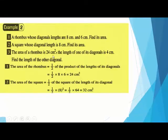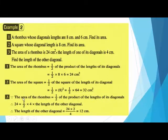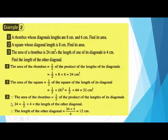The area of a rhombus is 24 and the length of one of its diagonals is 4 — find the length of the other diagonal. Using the formula: 24 equals half times 4 times the missing diagonal. We can rearrange: the missing diagonal equals 24 times 2 divided by 4. Alternatively, half of 4 is 2, so 24 divided by 2 equals 12. So the other diagonal is 12.